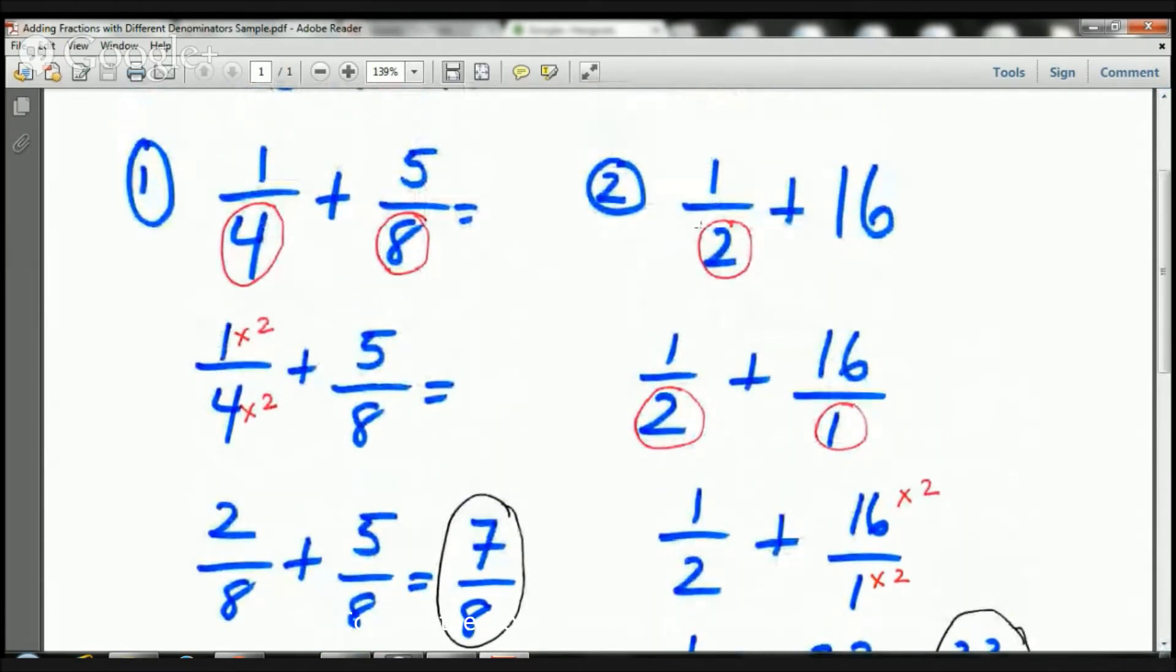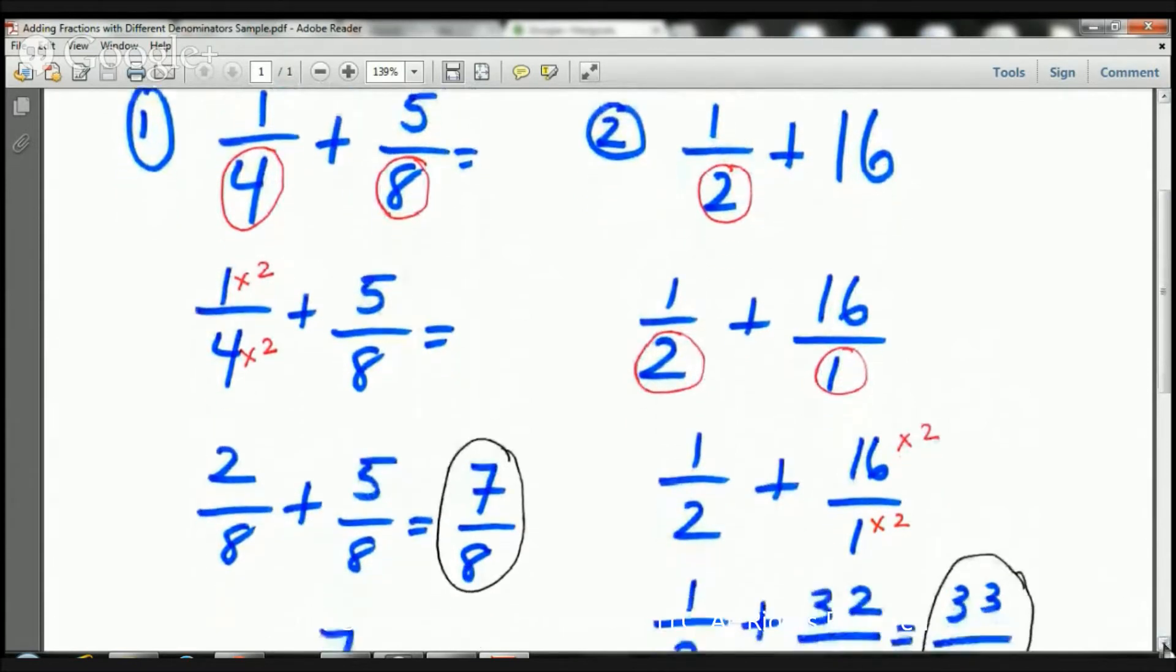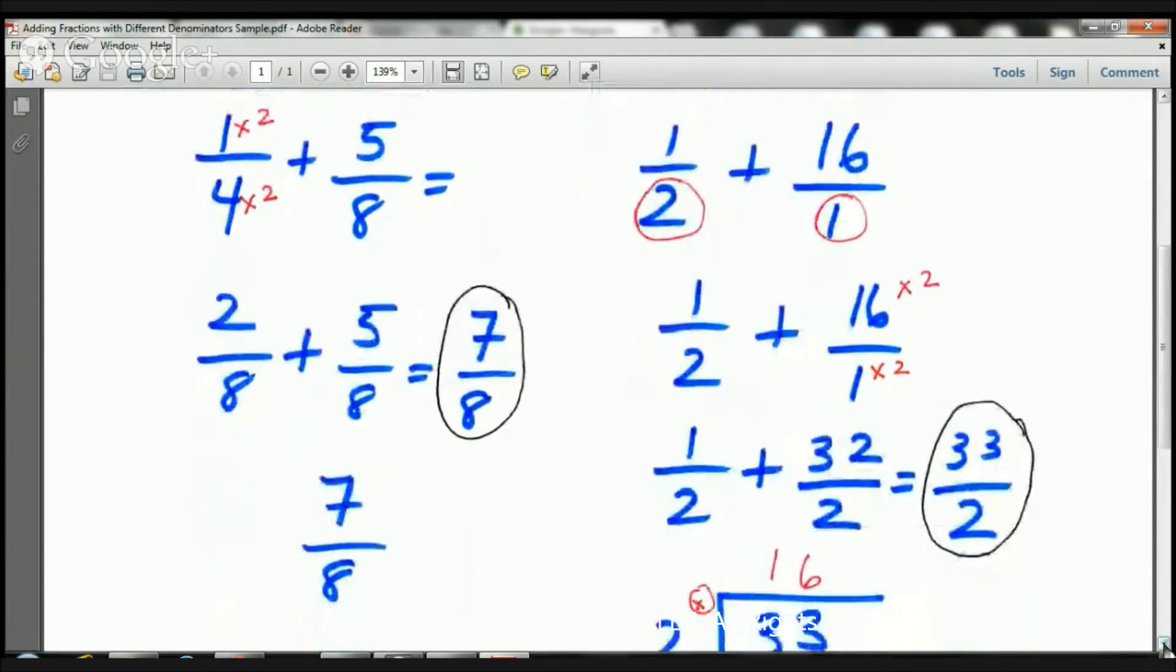The next example, I have 1 1/2 plus 16. And I'm going to take you through this exercise. So, here I have 1 1/2. We know that any whole number is over 1. So, this is going to be 16 over 1. If the number was 5, it would be 5 over 1. If the number was 10, what fraction would that look like? That's right. It would be 10 over 1. Whenever we have a whole number, it's always going to be over 1.